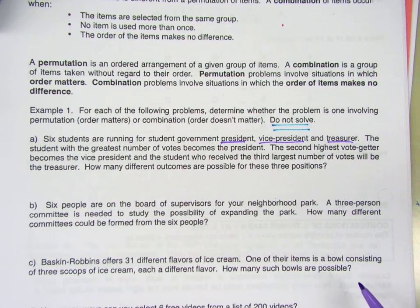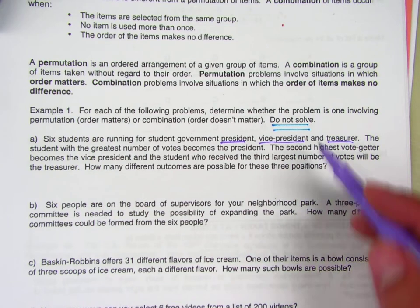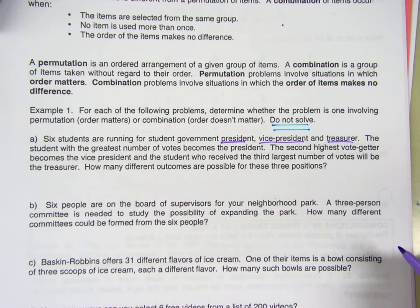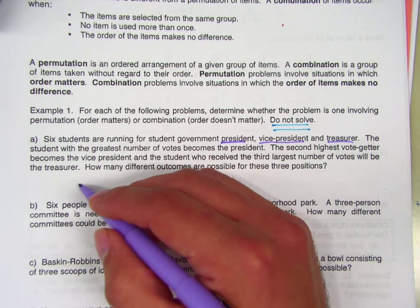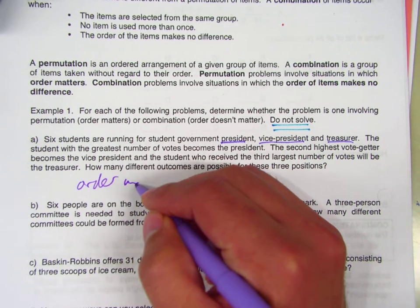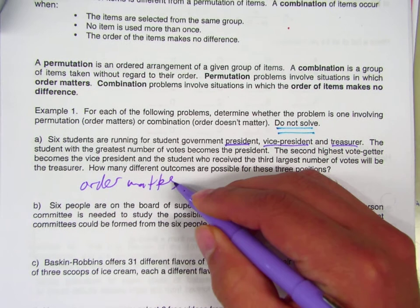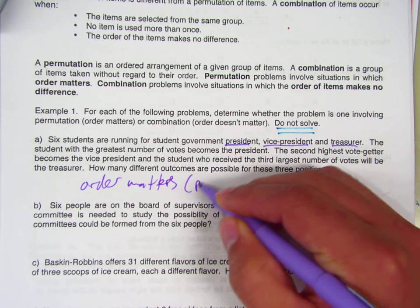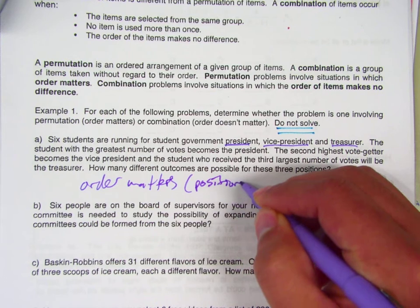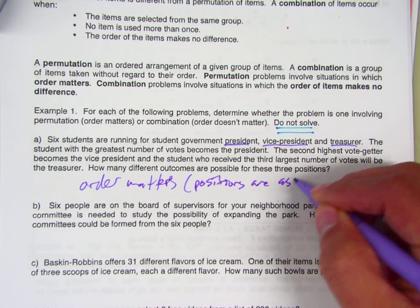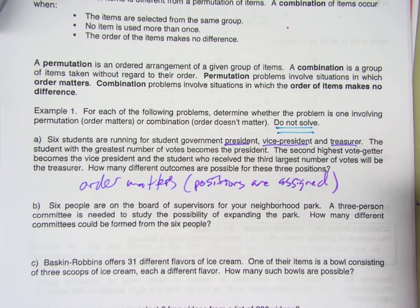You don't even have to finish reading this. Is the order in which these students are selected important? Yes. And it's not necessarily the order but the fact that there are positions assigned. Positions are assigned, that's going to make this a permutations problem.